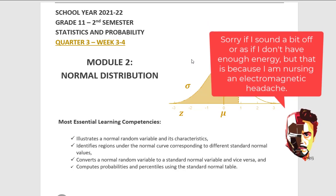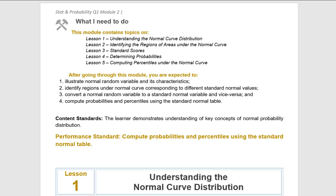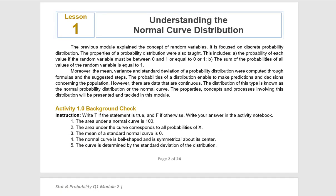The most essential learning competencies for this lesson are: illustrate a normal random variable and its characteristics; identify regions under the normal curve corresponding to different standard normal values; convert a normal random variable to a standard normal variable and vice versa; and compute probabilities and percentiles using the standard normal table. This module is subdivided into five different lessons. For today, we are only going to discuss lesson 1 and lesson 2, which is understanding the normal curve distribution and identifying the regions of areas under the normal curve. So I hope you have your modules with you.